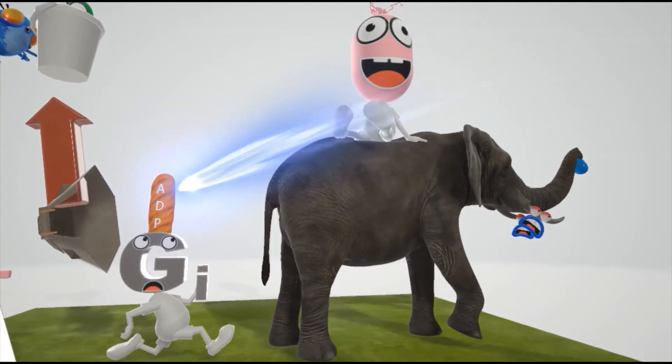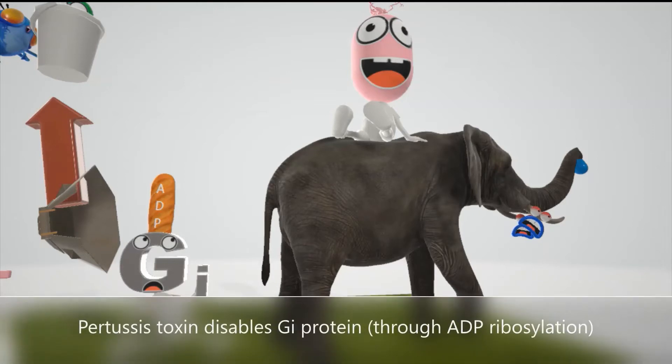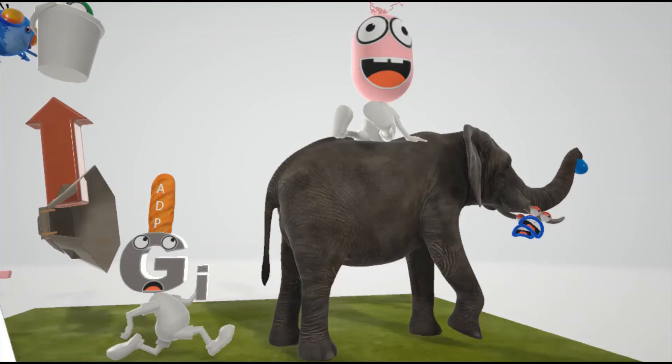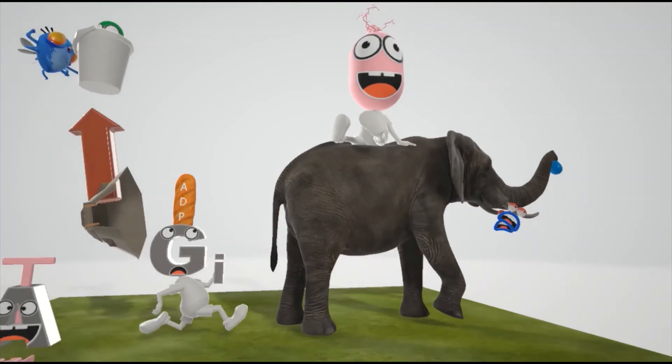That's because Bordetella Pertussis has a toxin which ADP ribosylates—it's actually the pertussis toxin—and that ADP ribosylates GI proteins, which inhibits them. That's why the GI protein here is being stopped. You know what? To make it more memorable, we'll have him exploding.